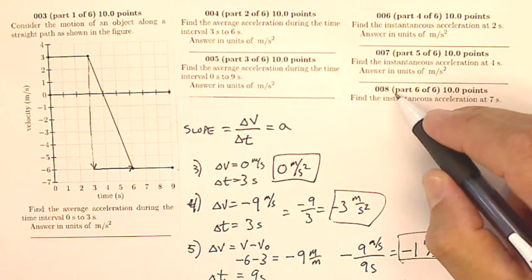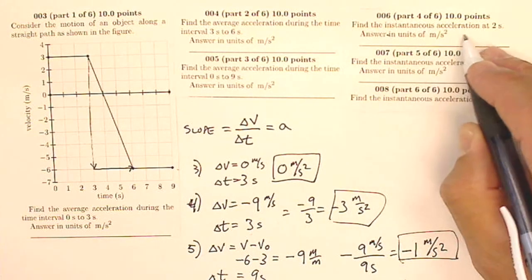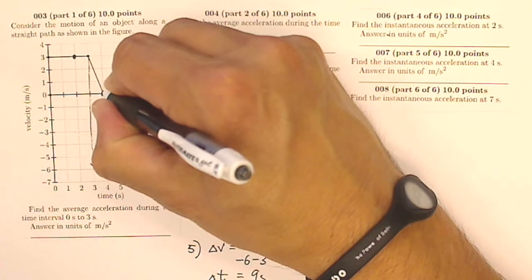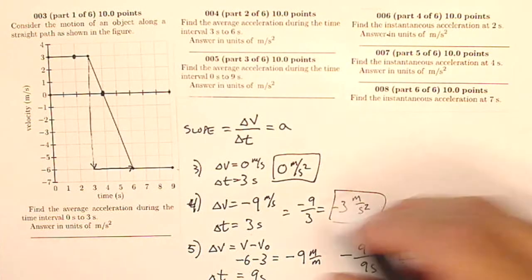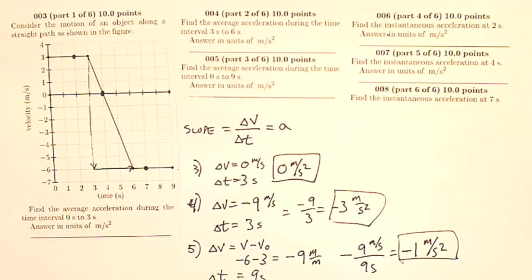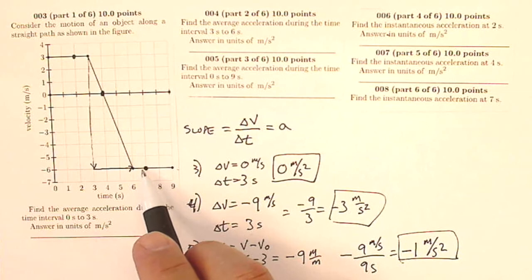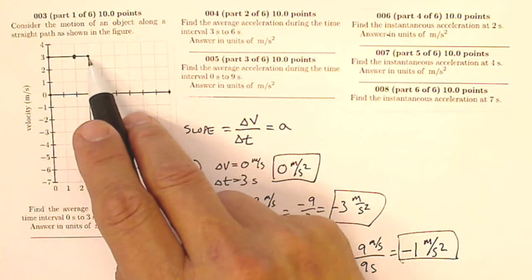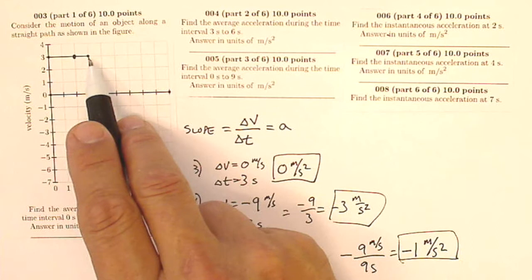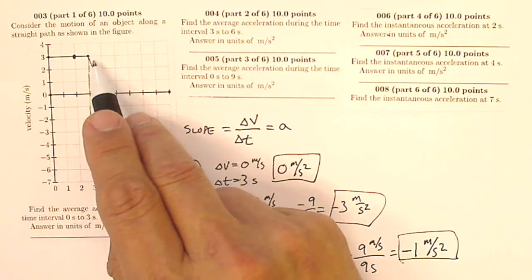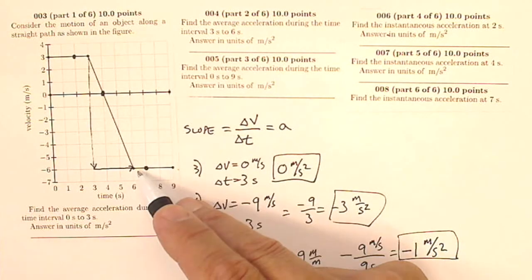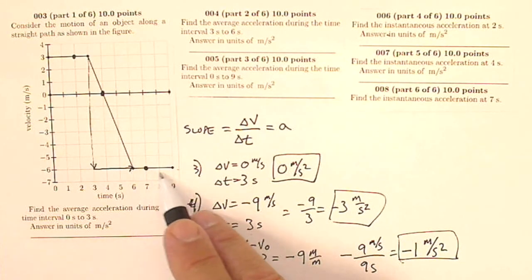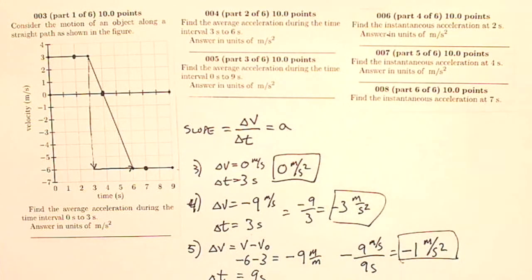Now questions six, seven, and eight are asking for instantaneous acceleration — at two seconds, at four seconds, and at seven seconds. To find the instantaneous acceleration, you want the slope right at that point. But since these are straight lines, the slope doesn't change while I'm on that line segment. So I've really already done the work. The slope of each line segment is the same as the instantaneous slope at any point on it. Questions six, seven, and eight should be pretty straightforward, and I'm not going to give you any more than that.